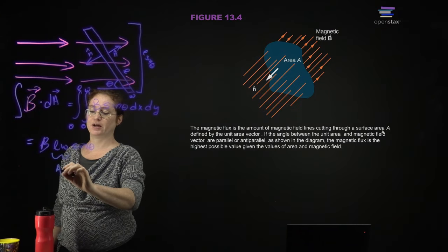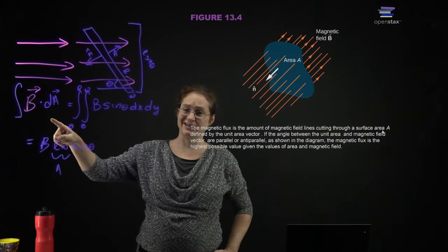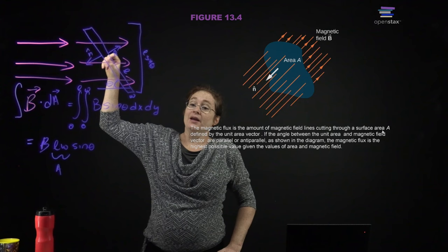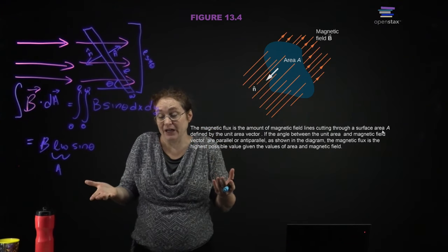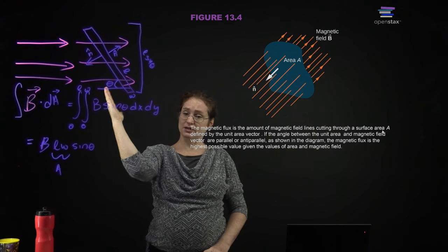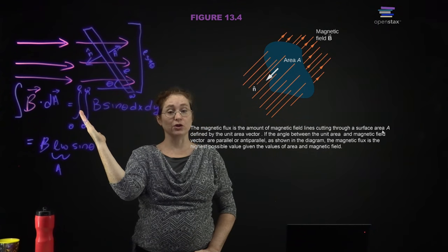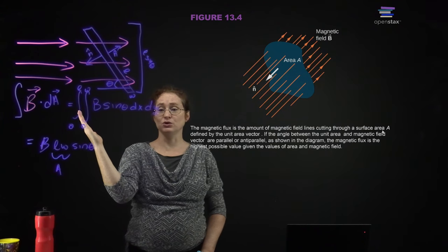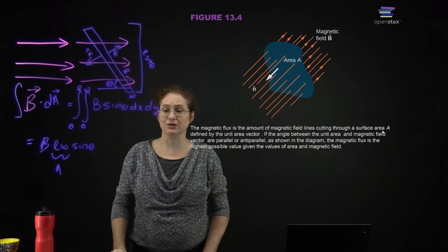This is just the area. I set it up as a 2D integral, but you already know the area of a square. So if you have a simple case where the magnetic field makes a constant angle with the area, you are just calculating the area perpendicular to the magnetic field.